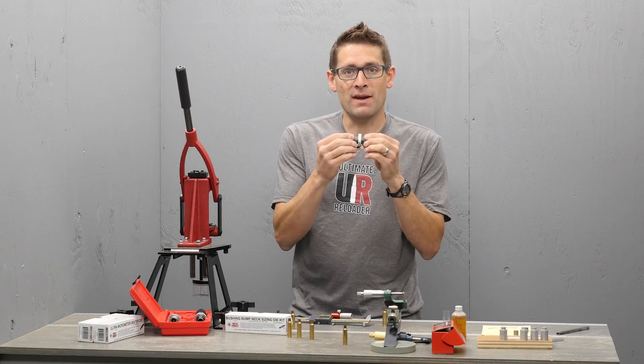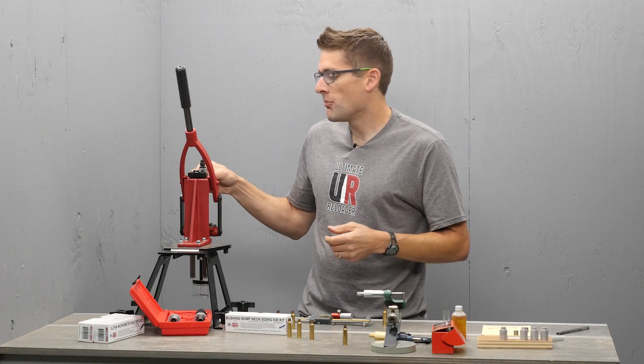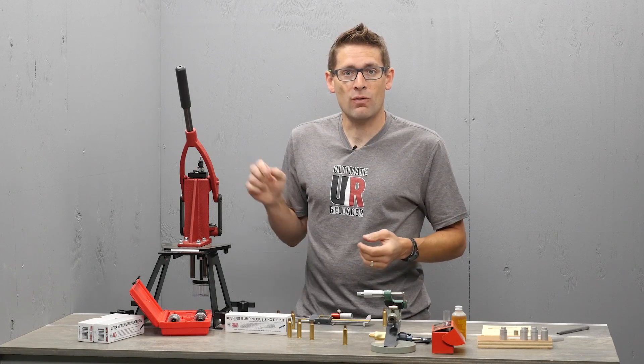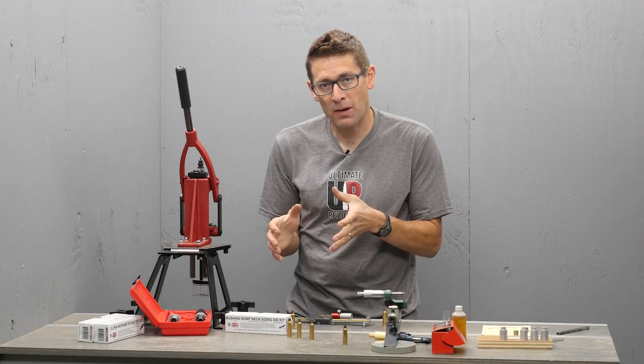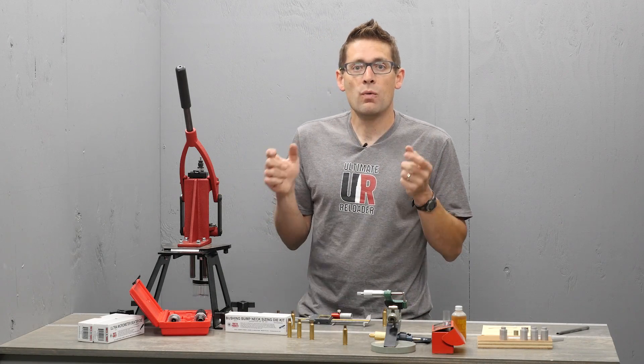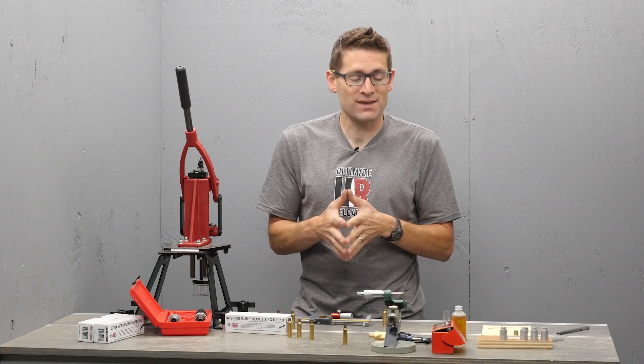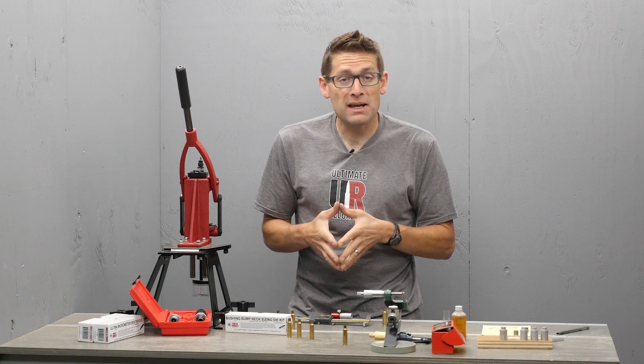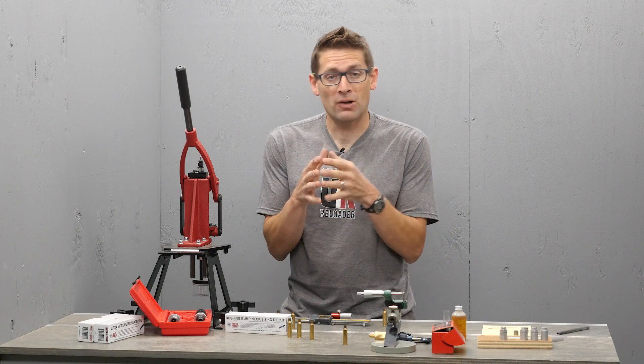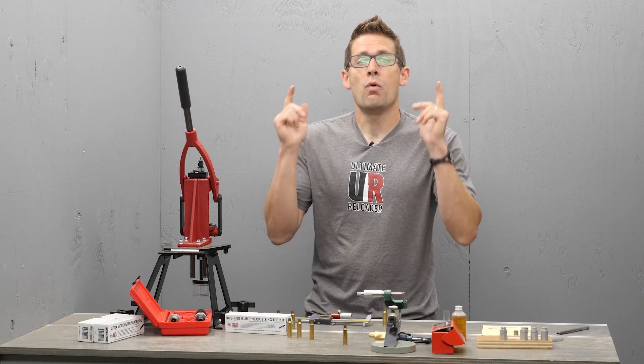And if we want different neck tension, we might have different brass neck thickness or we might have a little bit of a different bullet or just we want a little bit more or less tension, we use a different bushing. Bushings are available in many different sizes. I got a set of three here that covered me right in the middle. I can go on either side, which is great.